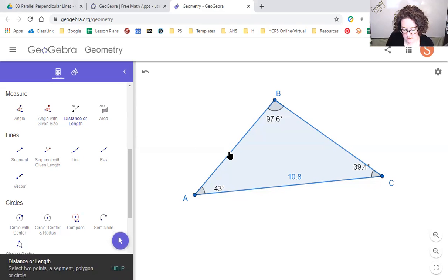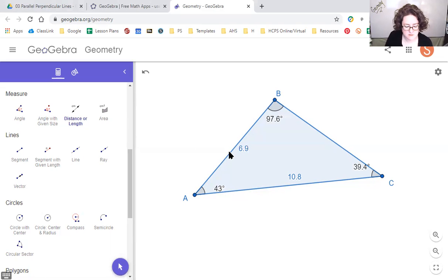Let's measure our other segments. Segment AB is 6.9, and segment BC is 7.4. So actually, our smallest segment is 6.9. Is he opposite the smallest angle? Angle C is the smallest at 39.4. So if this rule holds true, if the biggest angle is opposite the biggest side, and smallest angle is opposite the smallest side, then I should be able to pull my triangle around, and that property should still hold true.